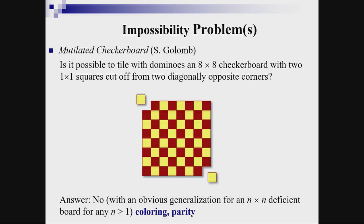My last example is probably the most famous puzzle invented by Golomb: the so-called mutilated chessboard problem. The question is whether it's possible to tile with dominoes an 8 by 8 checkerboard with two 1 by 1 squares cut off from two diagonally opposite corners. The answer is no, and the proof is one sentence, based on using coloring and parity as invariants.